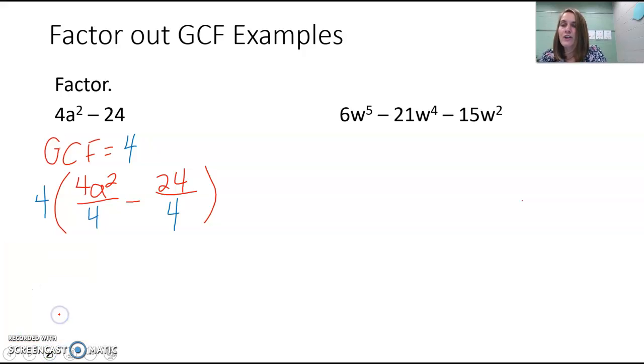So now when we simplify for our final answer, you have the 4 out front. 4a squared divided by 4, or 4 divided by 4 is 1, but we don't write coefficients of 1, so it's just a squared. 24 divided by 4 is 6, so minus 6. And that's our final answer, 4 times the quantity a squared minus 6. So go ahead and circle that.